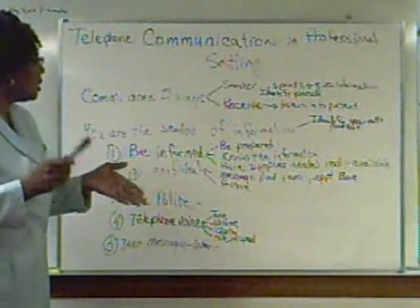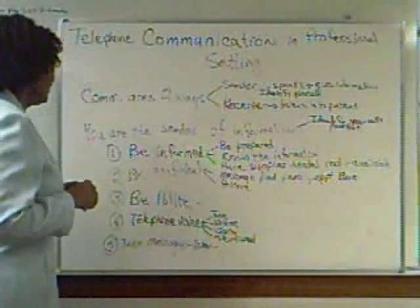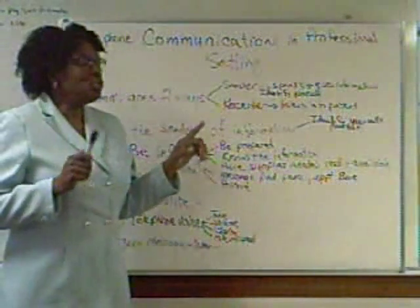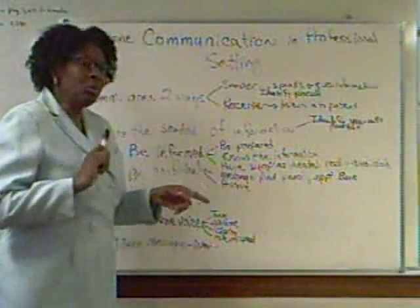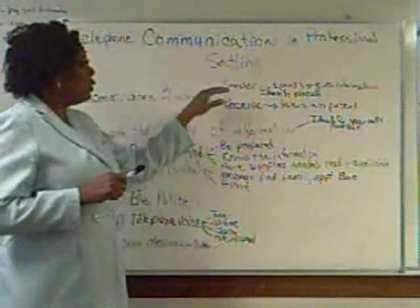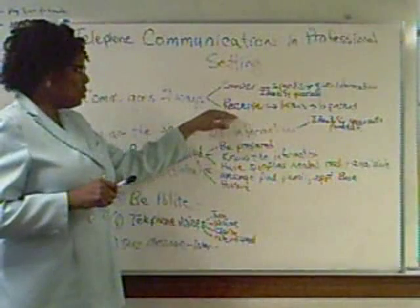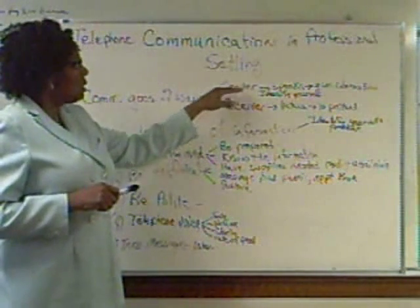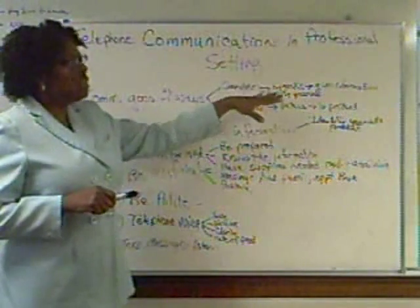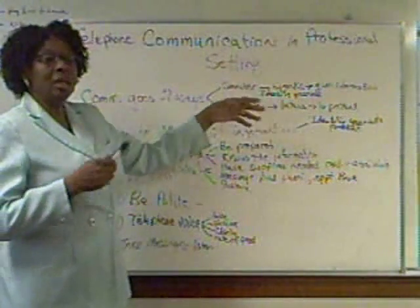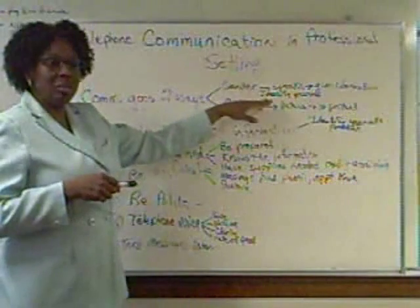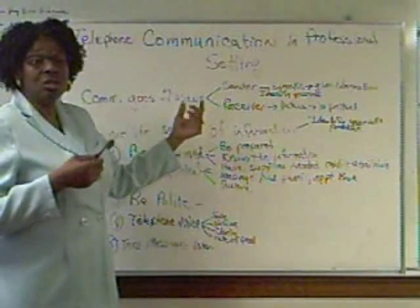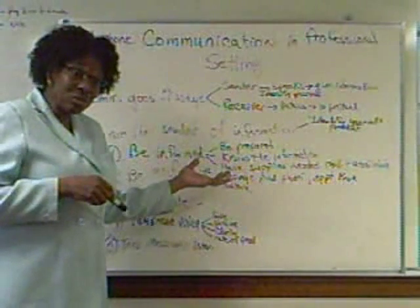Communication goes two ways: you have a sender and you have a receiver. Sometimes you may be the sender, and sometimes you have to be the receiver. What the sender does is they deliver the message. Generally, if it's telephone, it's going to be by speaking or talking. There are actually different types of communication — there's verbal, and then there's nonverbal communication.